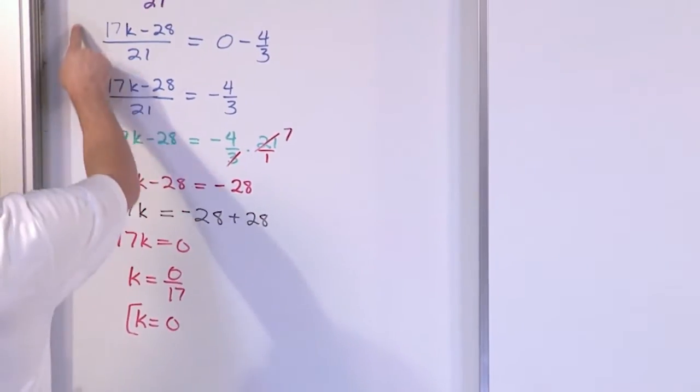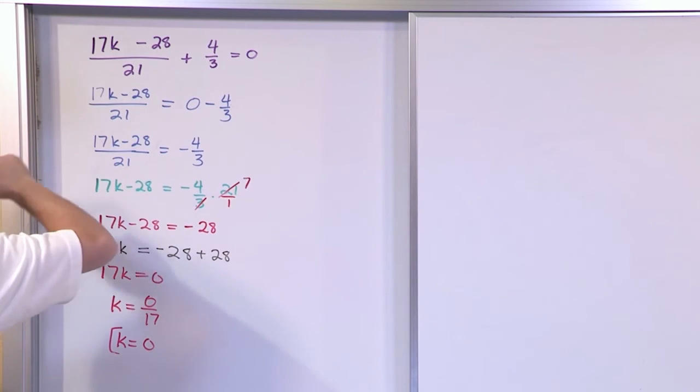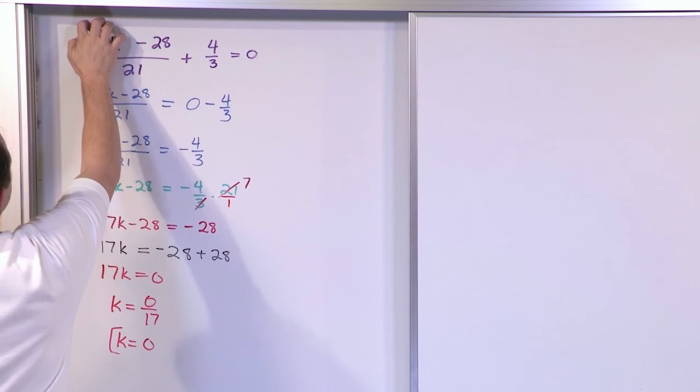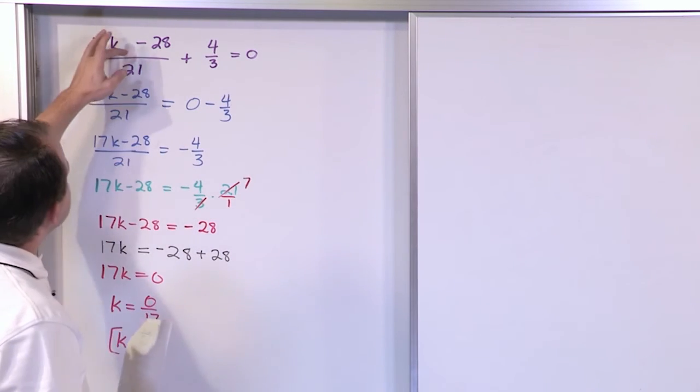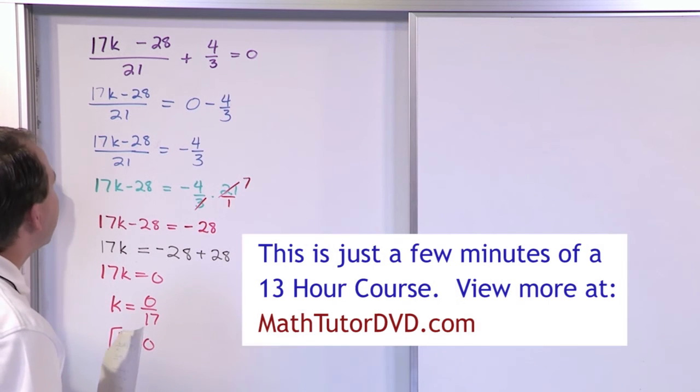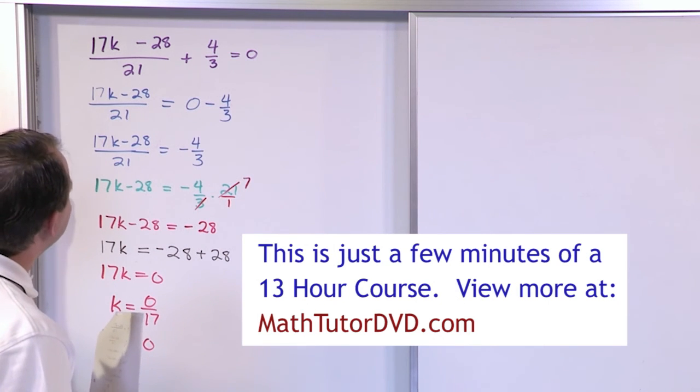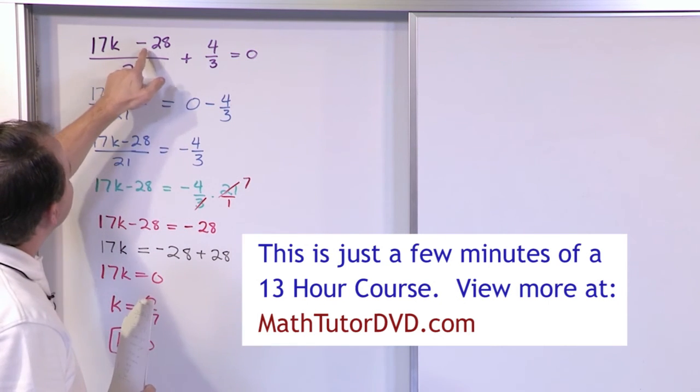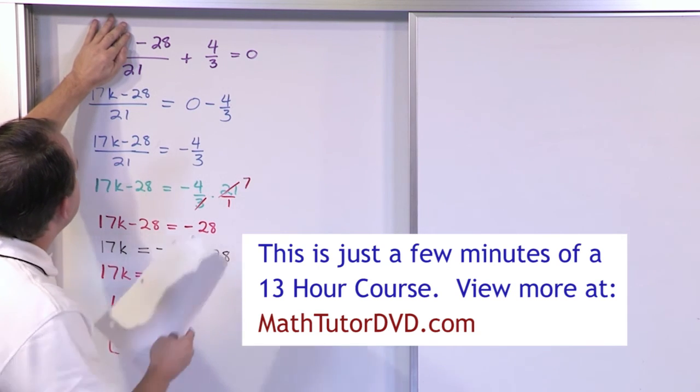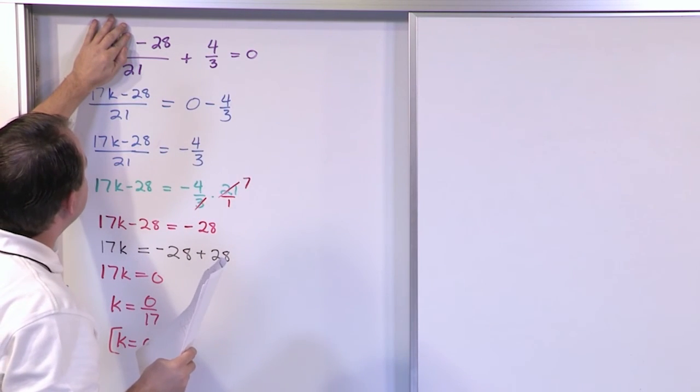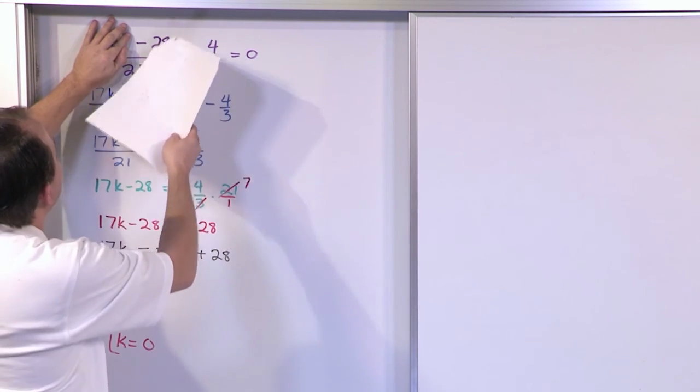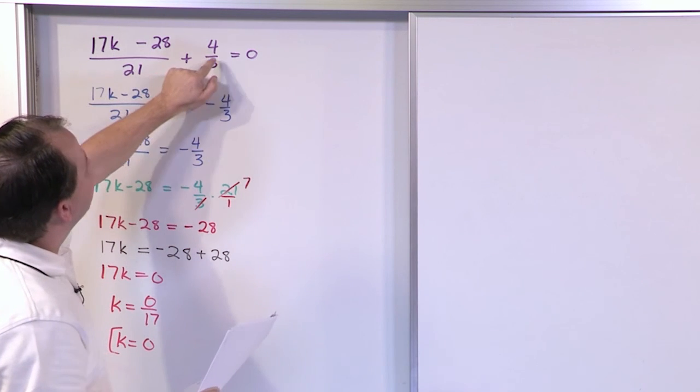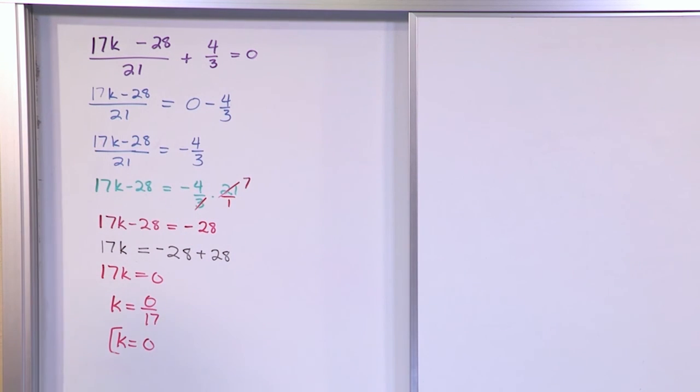Check yourself. Put k is equal to zero up here. If we put k is equal to zero, this is a zero term, then we'll have negative 28 up here. Negative 28 over 21, when you think about it, is going to actually reduce to negative 4 thirds. Because I'd be able to, if this is gone, then I'd be able to divide the top of this fraction by 7. It's going to give me 4. Divide the bottom by 7. That's going to give me 3. So I'm going to have negative 4 thirds here. When I have negative 4 thirds plus this 4 thirds, I'm going to get zero. So k is equal to zero is, in fact, the correct answer.